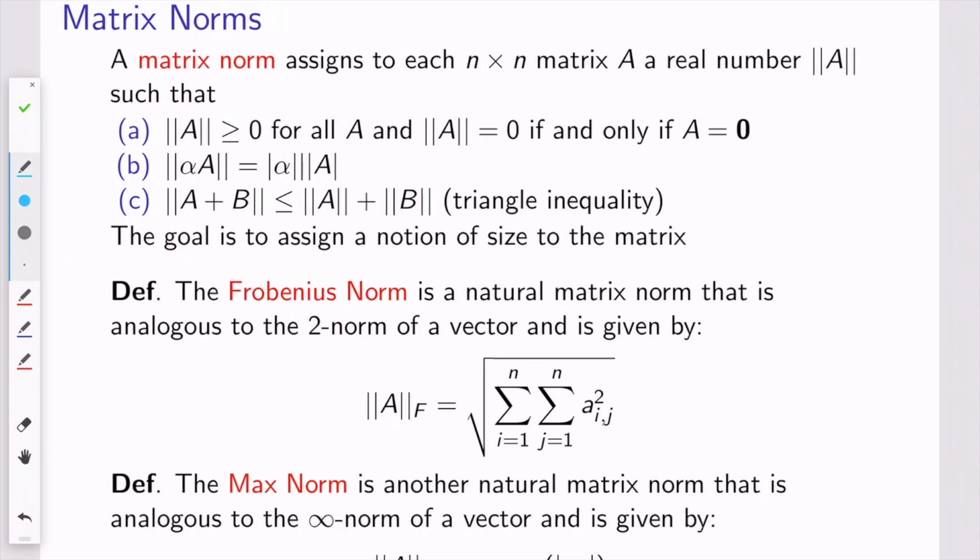Now that we've introduced vector norms, let's talk about matrix norms. A matrix norm assigns to every n by n matrix A a real number, and it obeys really the same rules as the vector norm. It should be non-negative, and it should only equal 0 if the matrix is 0. It has this scaling property, and it obeys a triangle inequality. The goal is to try to assign a notion to the size of a matrix.